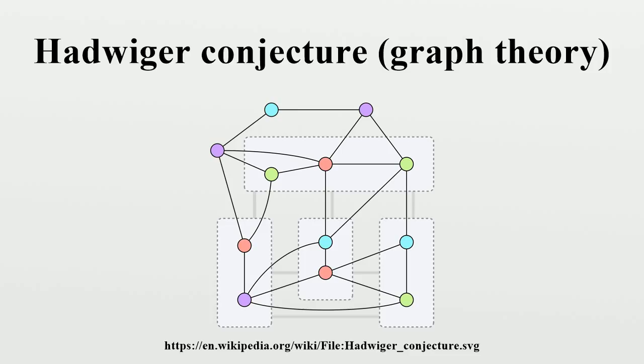The Hadwiger number H of a graph G is the size K of the largest complete graph K_K that is a minor of G. It is also known as the contraction clique number of G. The Hadwiger conjecture can be stated in the simple algebraic form chi ≤ H where chi denotes the chromatic number of G.